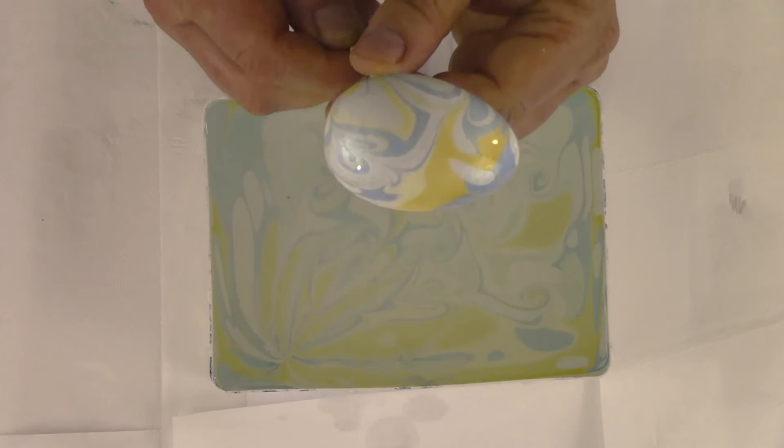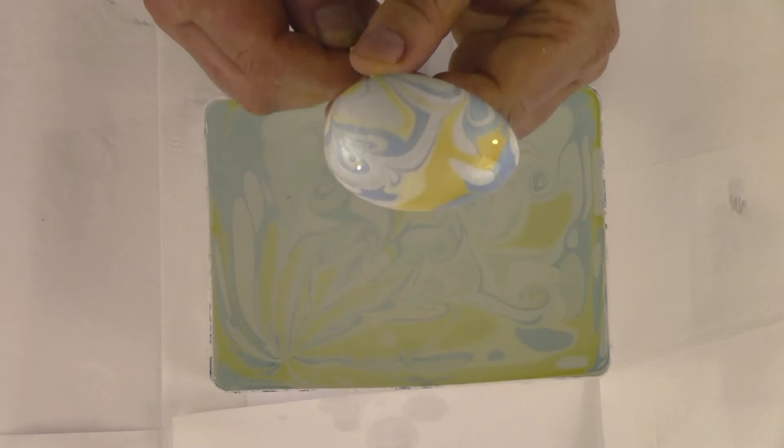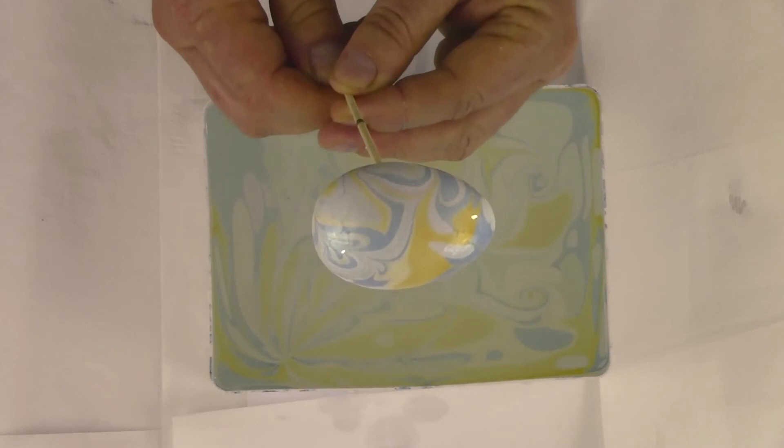But once it's dry, it won't come off. And there you have it, a polystyrene egg with marbling for fun kits, a country kit. I'm Craig Joubert. Thank you for watching. Take care.